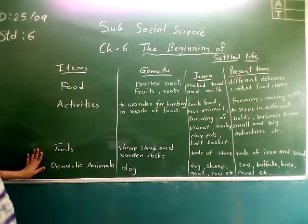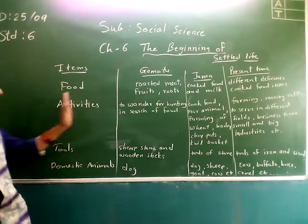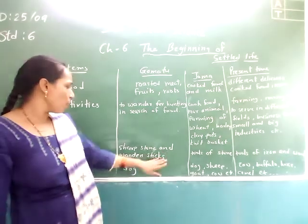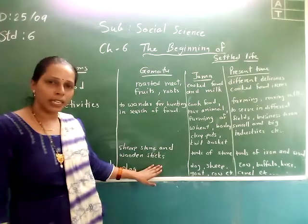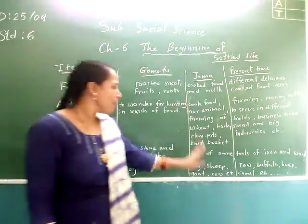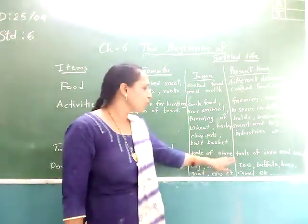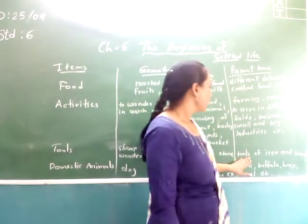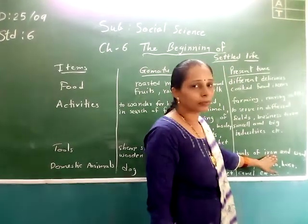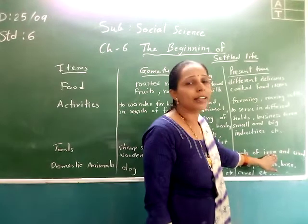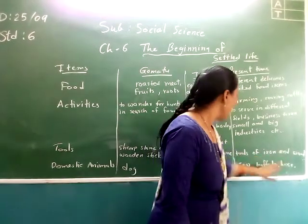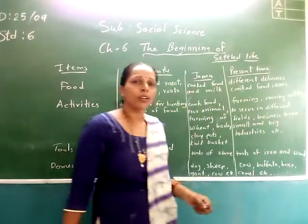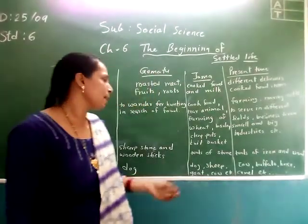Now, which type of tools did the people use in the time of Homo 2? Sharp stone and wooden stick. In the time of Joma, tools of stone were used. And in the present time, tools of iron — iron or wood can be used as a tool.